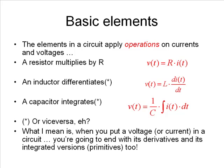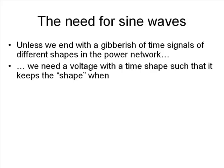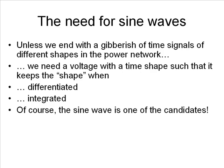But the point is that if you put any voltage or current in a circuit, you're going to end for sure with all its derivatives and integrals. So, unless you want a real mess of time signals of different shapes in the power network, we better choose one voltage with a shape so that its derivatives and integrals look exactly like it. It has the same shape when differentiated and the same shape when integrated as well. Of course, the sine wave is a very good candidate.